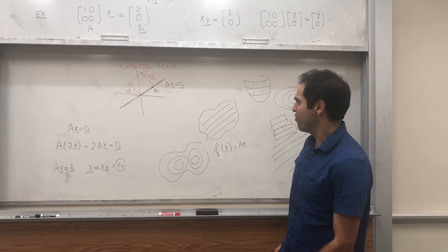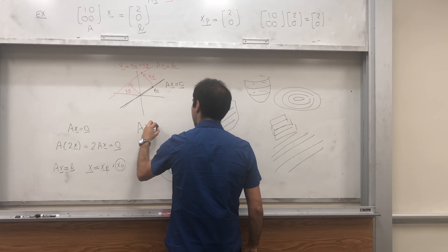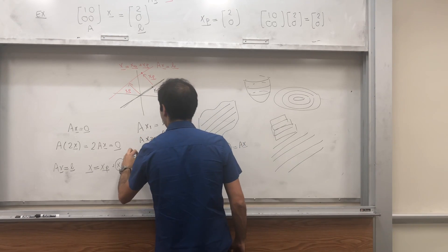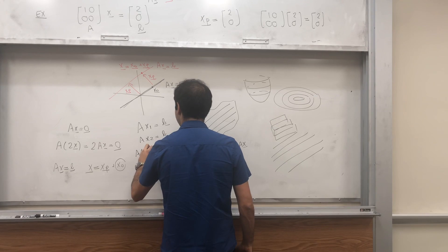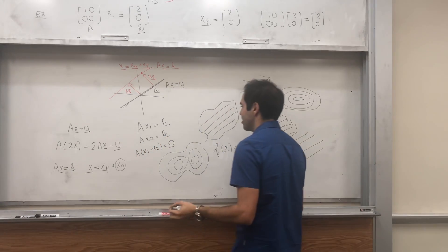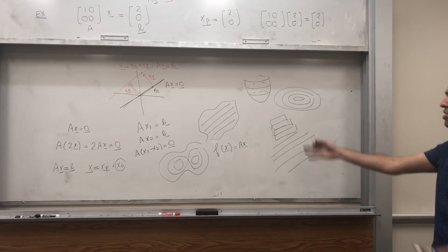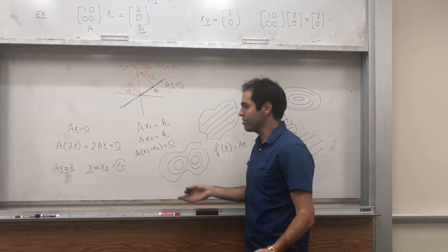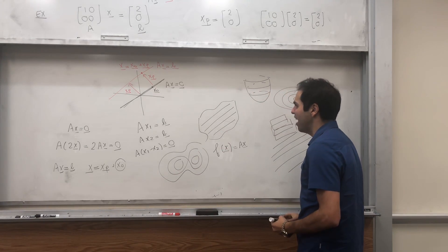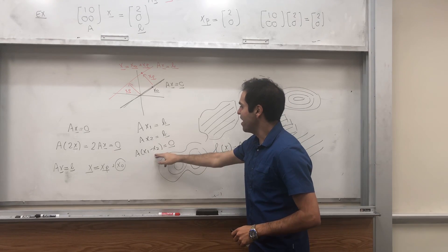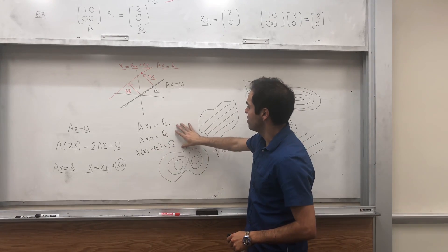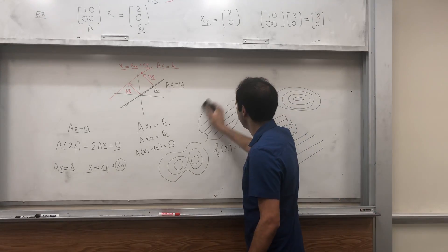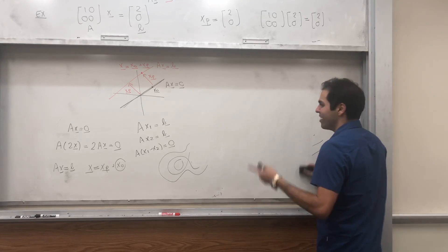Because if Ax1 = b and Ax2 = b, then A(x1 − x2) = 0. If the only solution is trivial, then x1 equals x2, giving just one solution. Otherwise there are infinitely many. So that's one consequence.